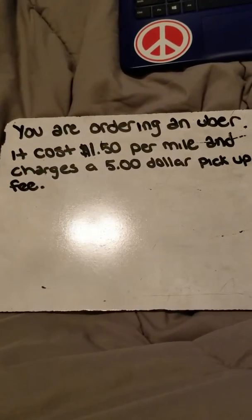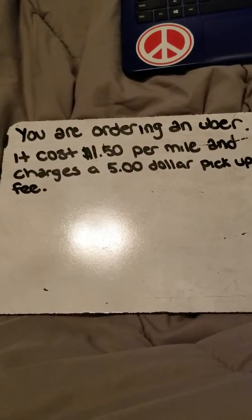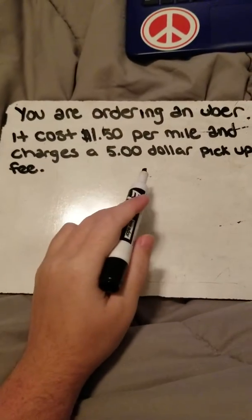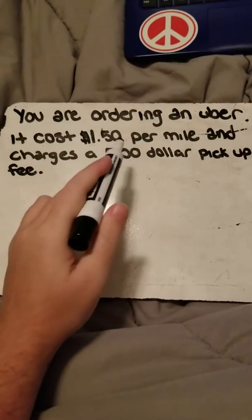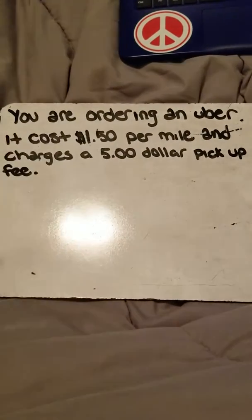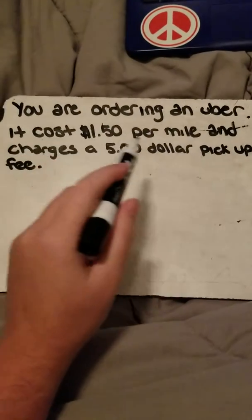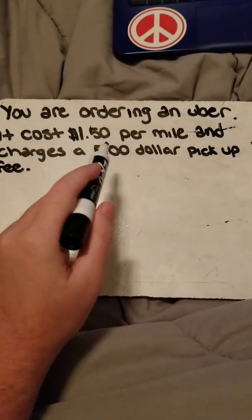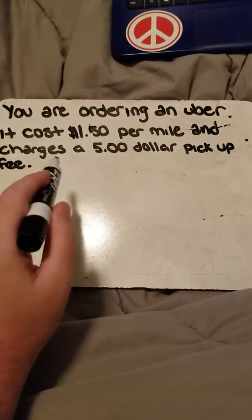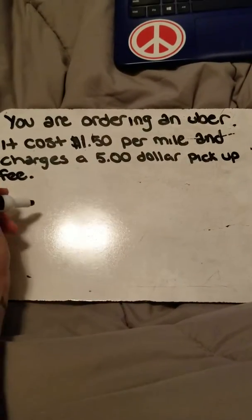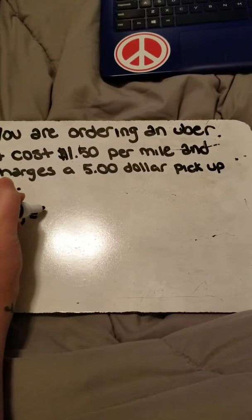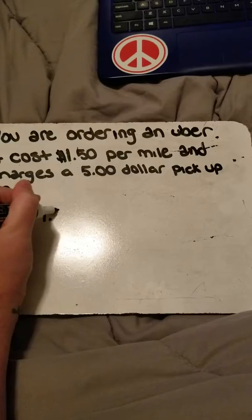Linear equations, or constant rate of change questions, involve a set amount where the outcome depends on how many of some constant you use. For example, you're ordering an Uber — it costs a dollar fifty per mile and charges a five dollar pickup fee. The result is going to depend on that constant rate of a dollar fifty per mile.